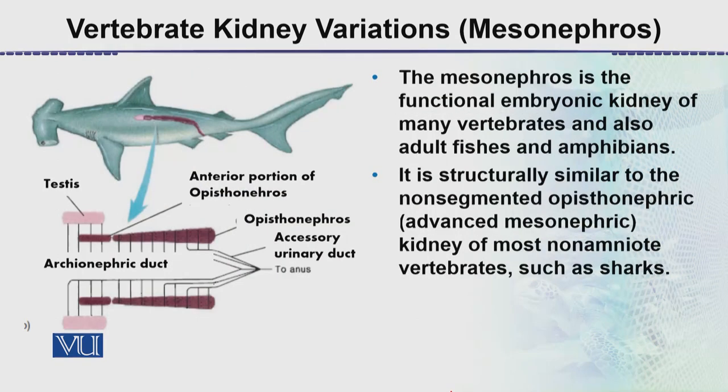The mesonephros is the functional embryonic kidney of many vertebrates and also of adult fishes and amphibians as mentioned. Adult fishes that have mesonephros are generally sharks or other advanced fishes. It is structurally similar to the non-segmented opistonephros, which we call the advanced mesonephric kidney, found in most non-amniote vertebrates such as sharks.